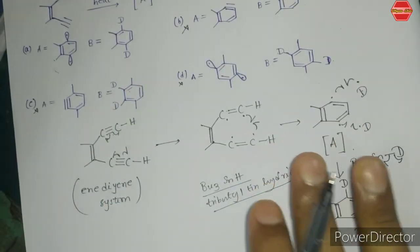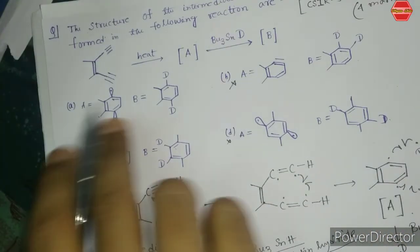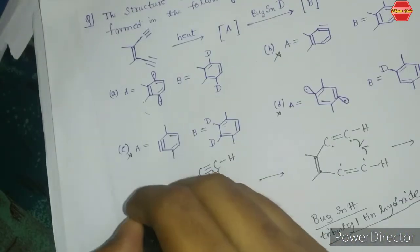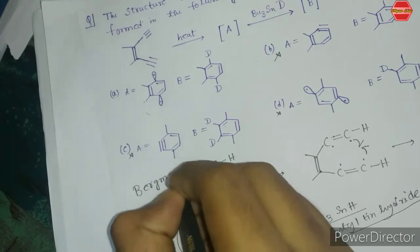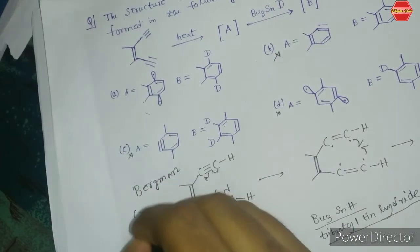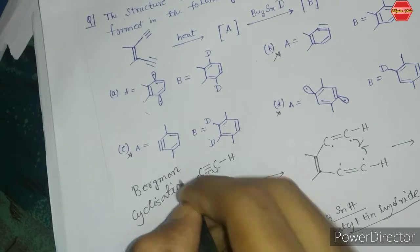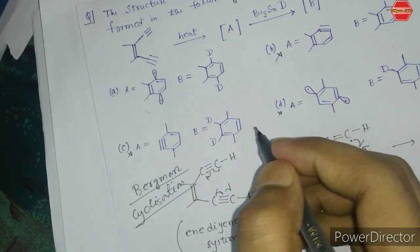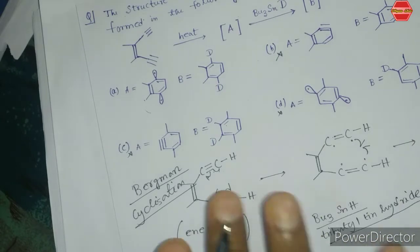This is your final product for the given question. You can easily predict the answer if you know this concept — this is called Bergman cyclization, also known as Bergman cycloaromatization. This is a very important concept. Now there is another important aspect of the enediyne system.